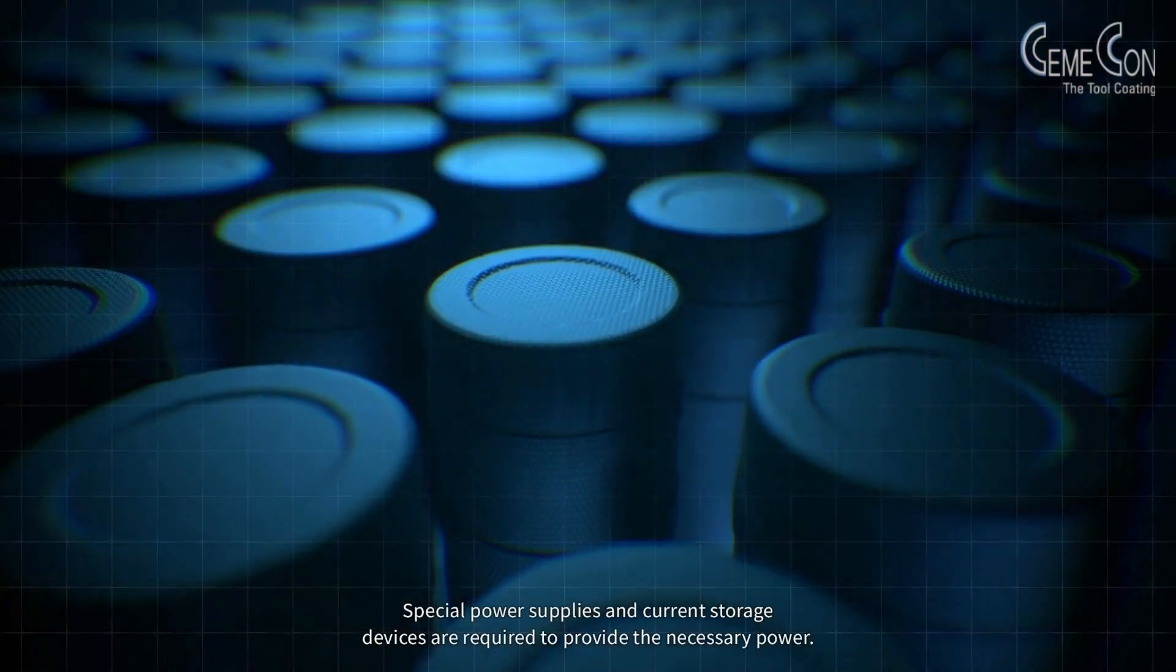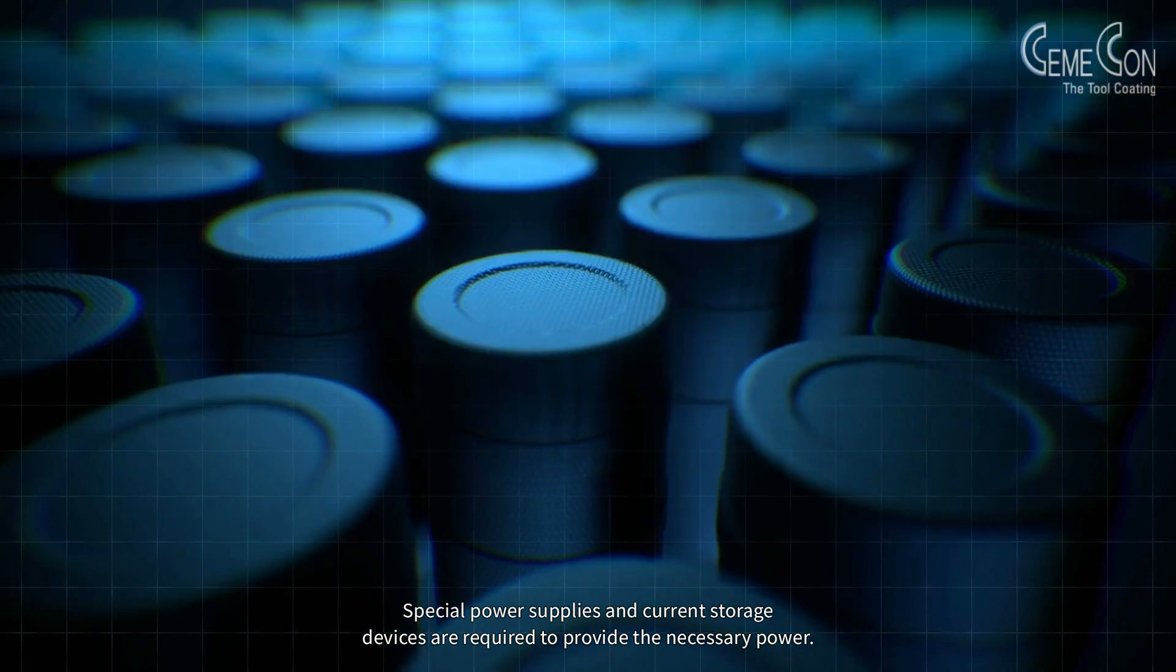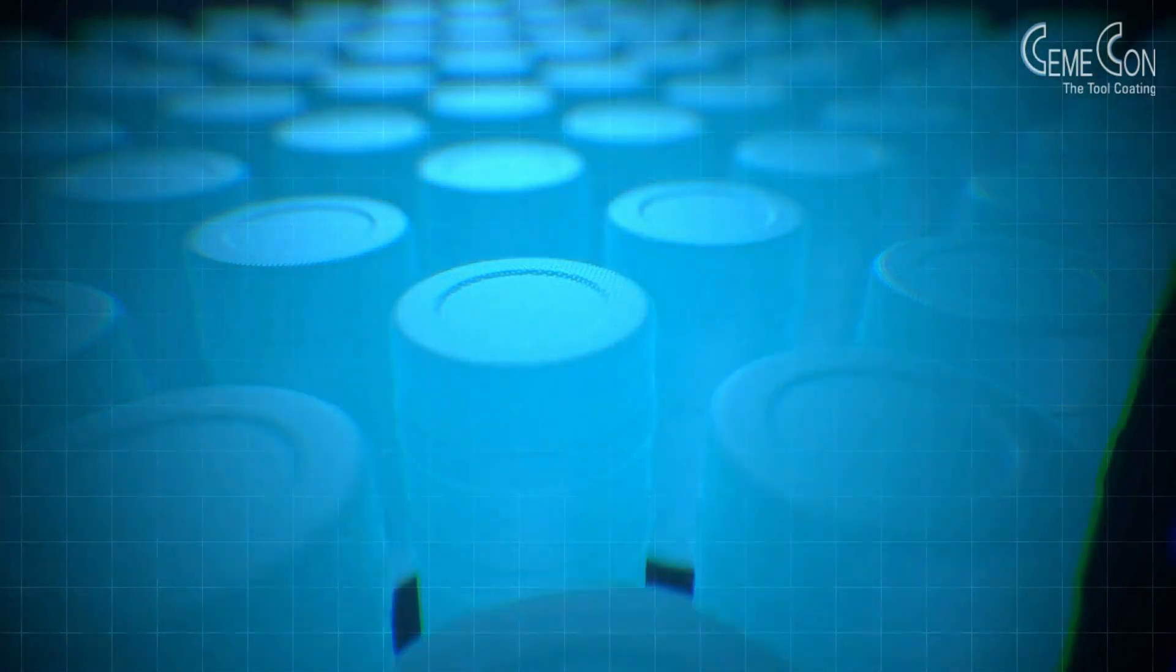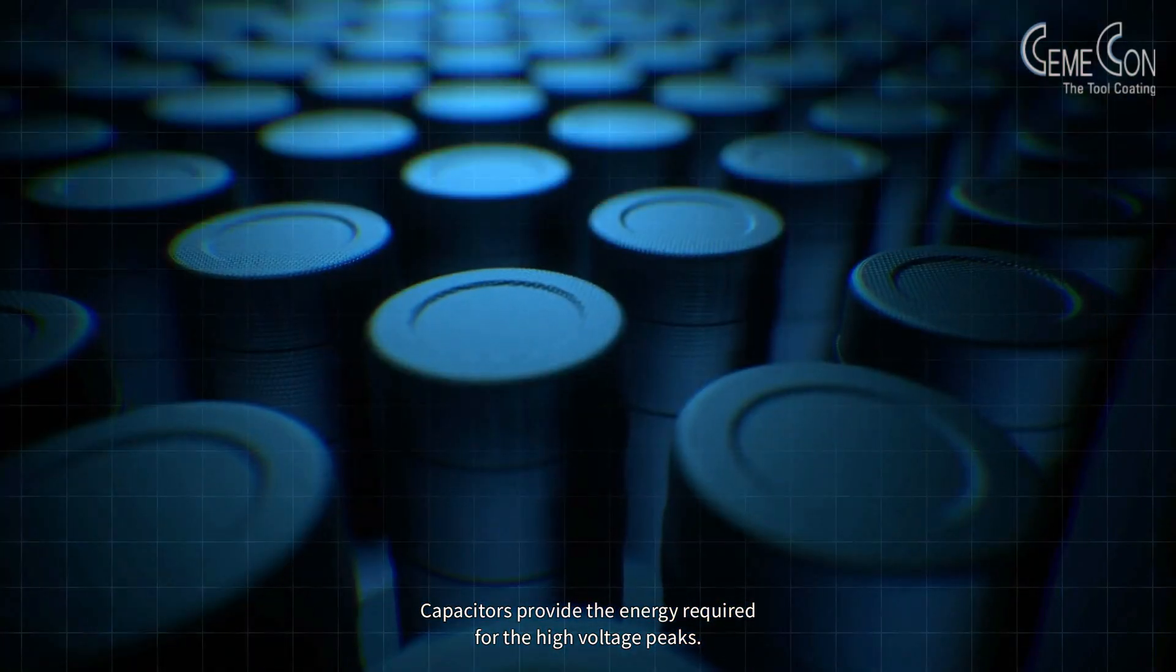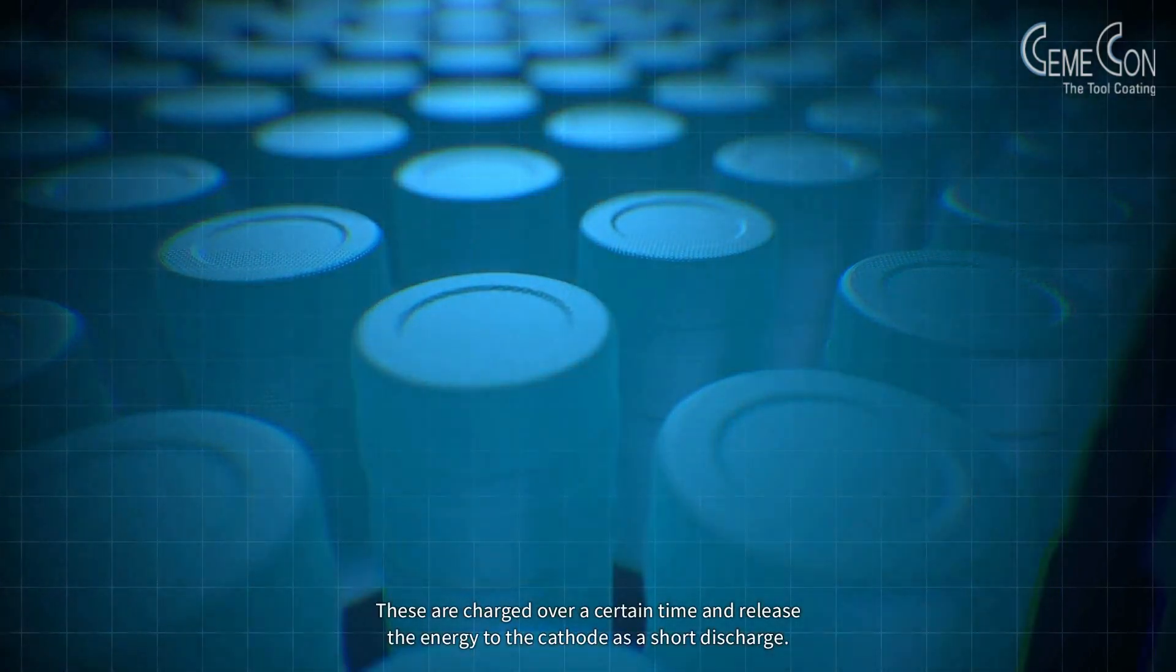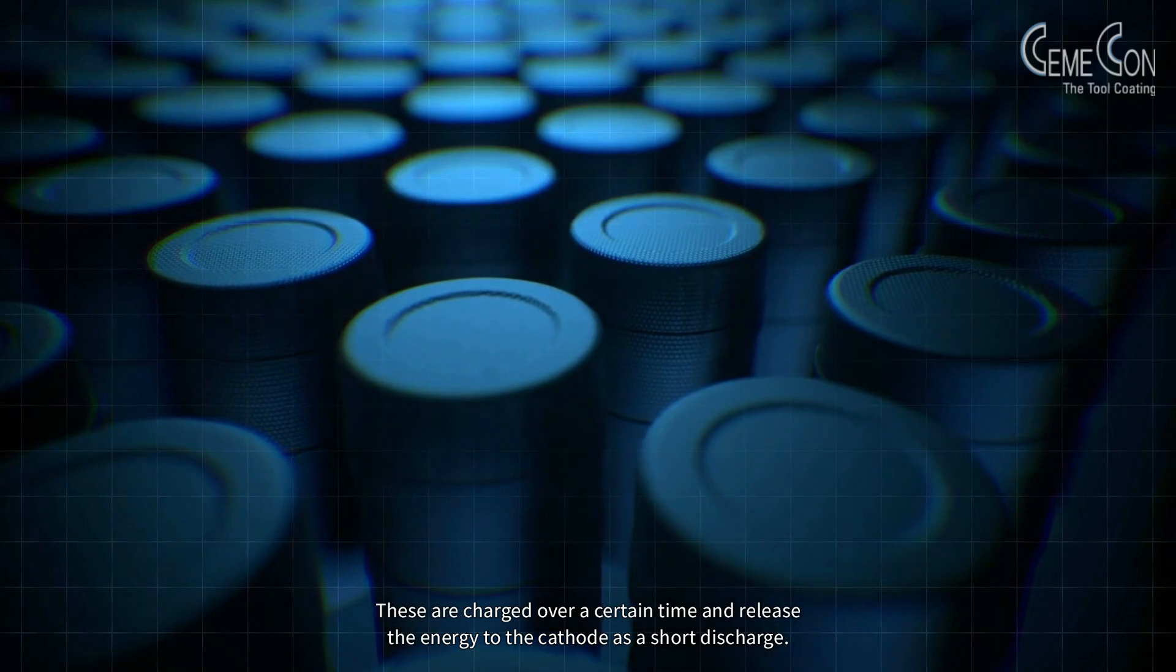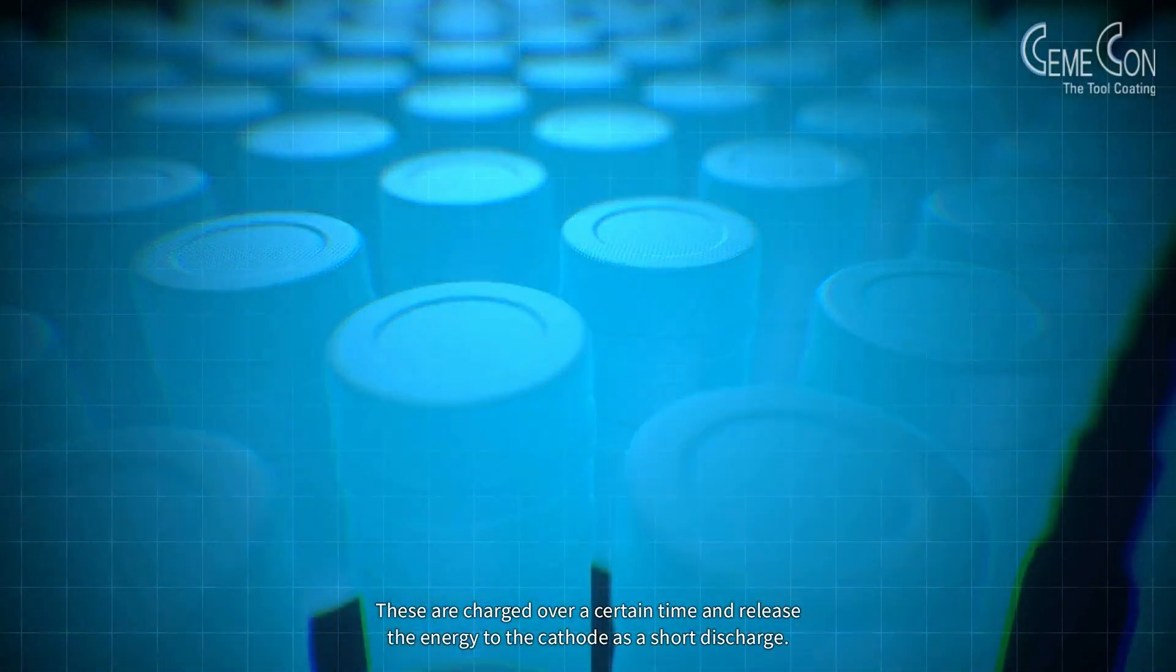Special power supplies and current storage devices are required to provide the necessary power. Capacitors provide the energy required for the high voltage peaks. These are charged over a certain time and release the energy to the cathode as a short discharge.